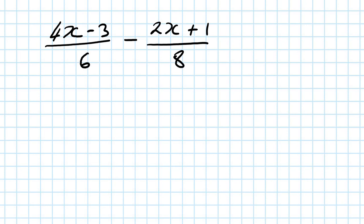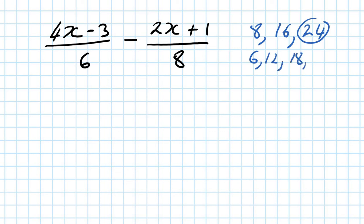The denominators are 6 and 8, so the common multiple of 6 and 8 is 24. Listing multiples of 8: 8, 16, 24 — and 24 is also a multiple of 6 (6, 12, 18, 24). So the common denominator is 24.